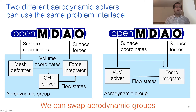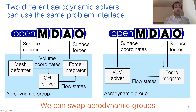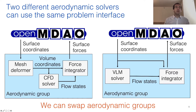On the left, we have a RANS-CFD solver that uses a volume mesh, and on the right, we have a VLM solver that only requires a surface mesh. The coupling to OpenMDAO for both of these solvers is done with the same interface. The inputs are the surface coordinates that define the aerodynamic problem boundary, and the outputs are the surface forces that come out from the analysis. As long as they conform with this minimal API, both solvers can do different computations internally.